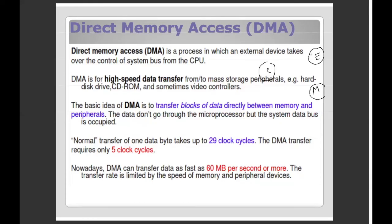When we do data transfer, we need to access the memory to the CPU. What do we do with the external device? This is how we communicate with the CPU. These external devices are very high speed. We need to transfer data, which means we can access the memory to the CPU — we need the memory connection to the CPU.